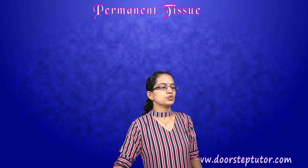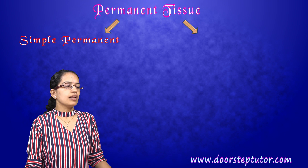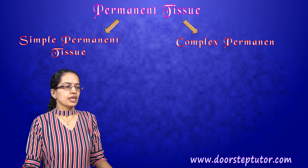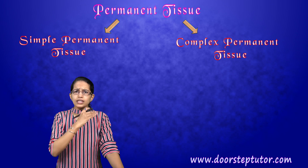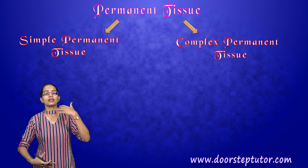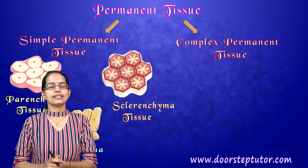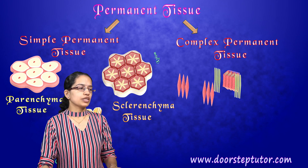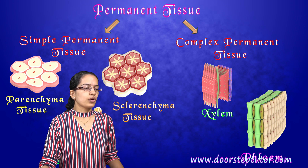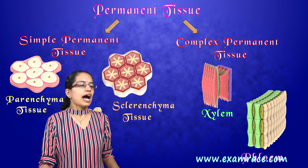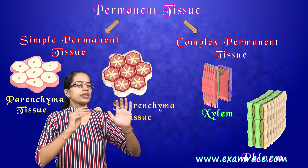When we come to the permanent tissues, we can further classify those as simple permanent tissues and complex permanent tissues. Simple permanent tissues would include parenchyma, colenchyma, and sclerenchyma. We'll understand that in a while. However, complex would include xylem and phloem. So xylem and phloem would be part of your complex, and simple would include parenchyma, colenchyma, and sclerenchyma.